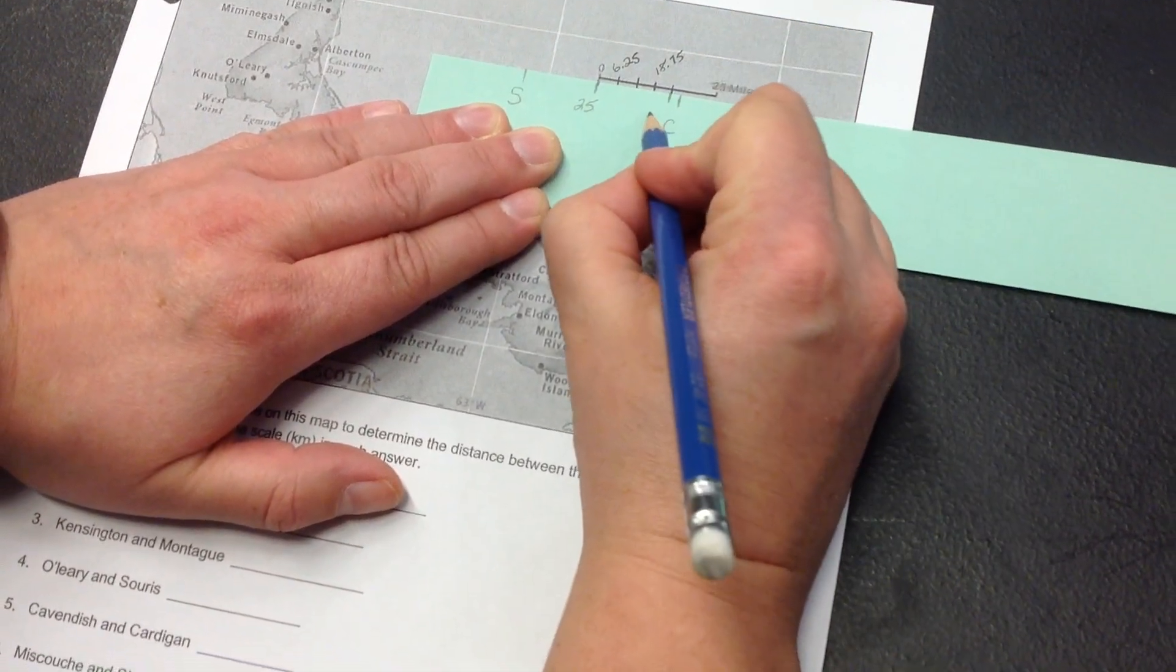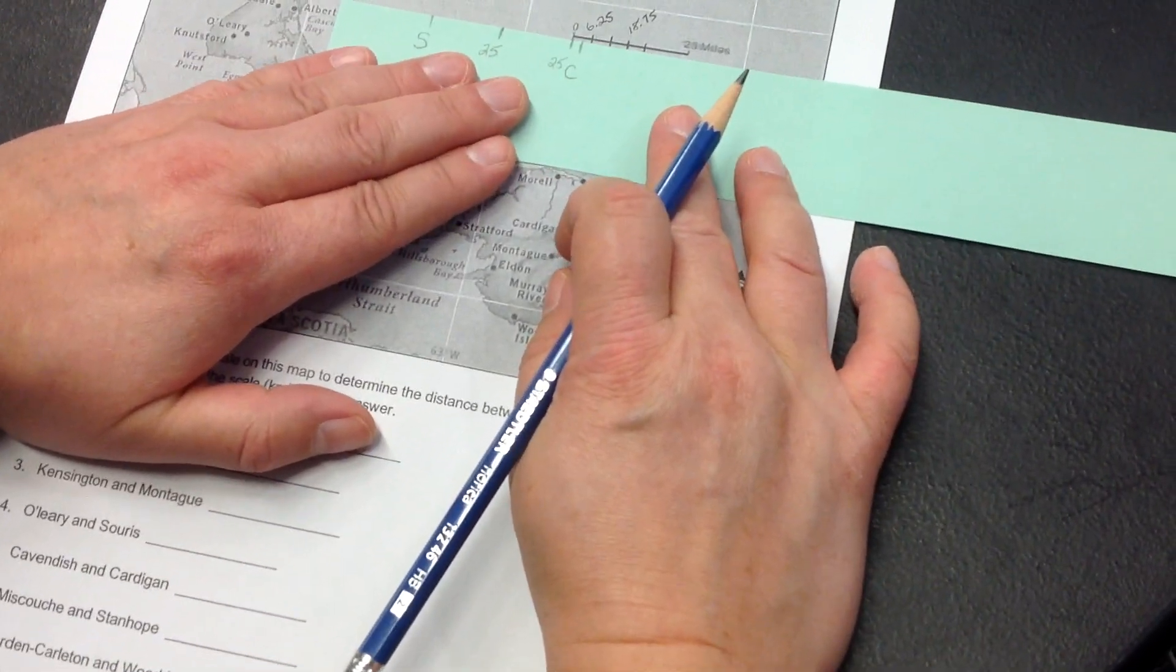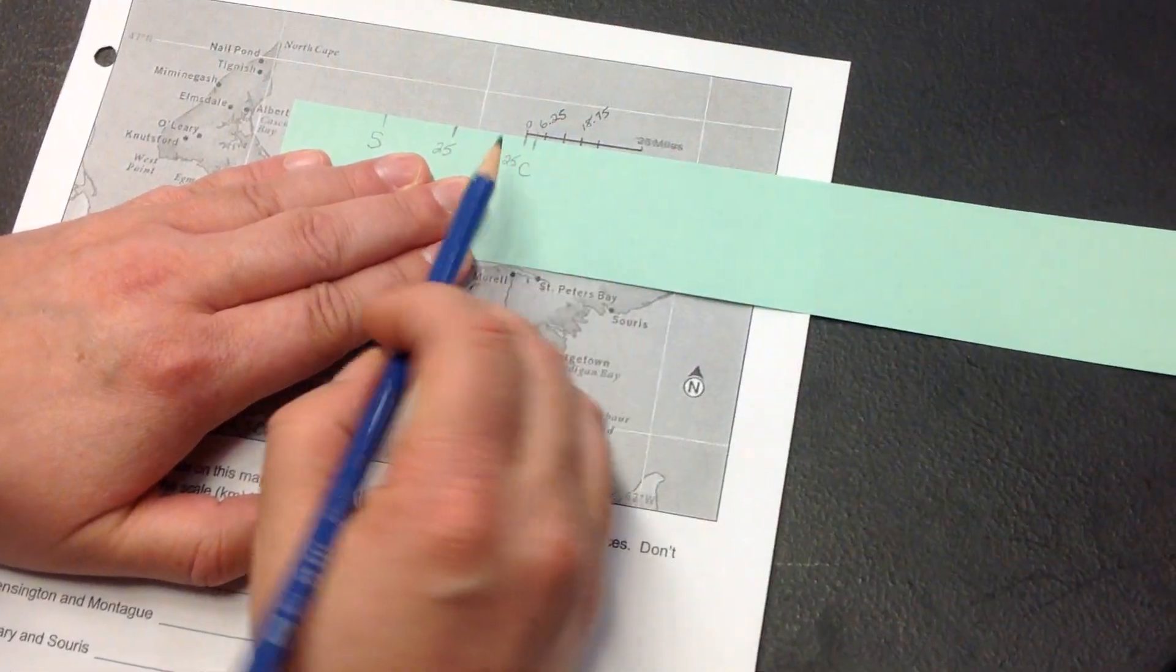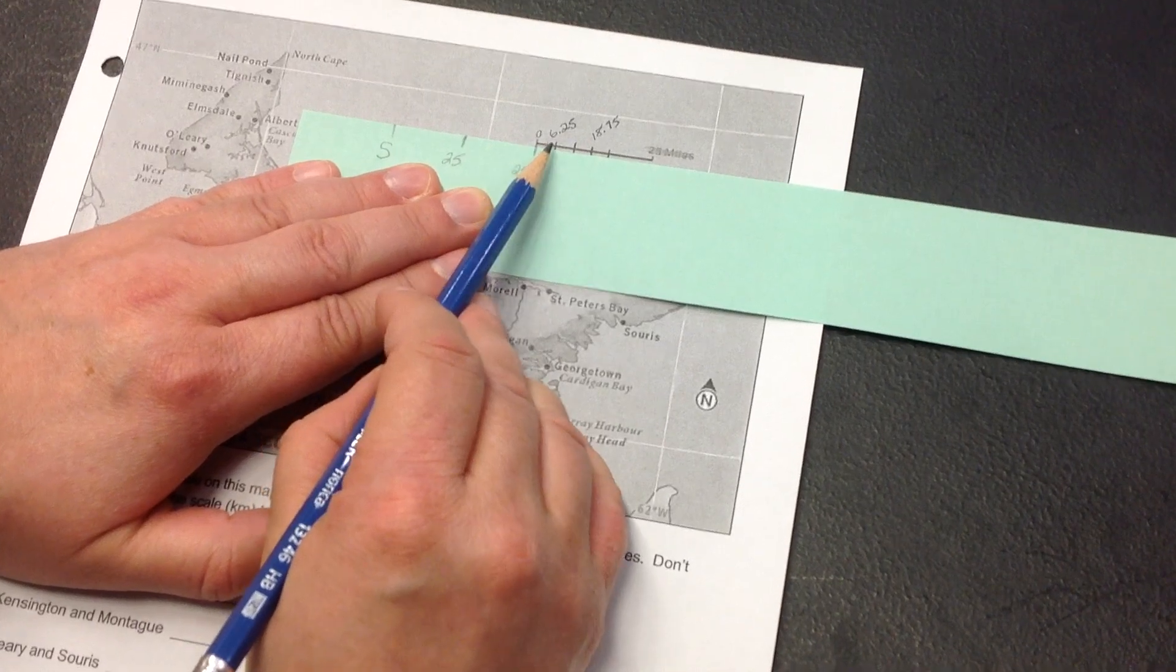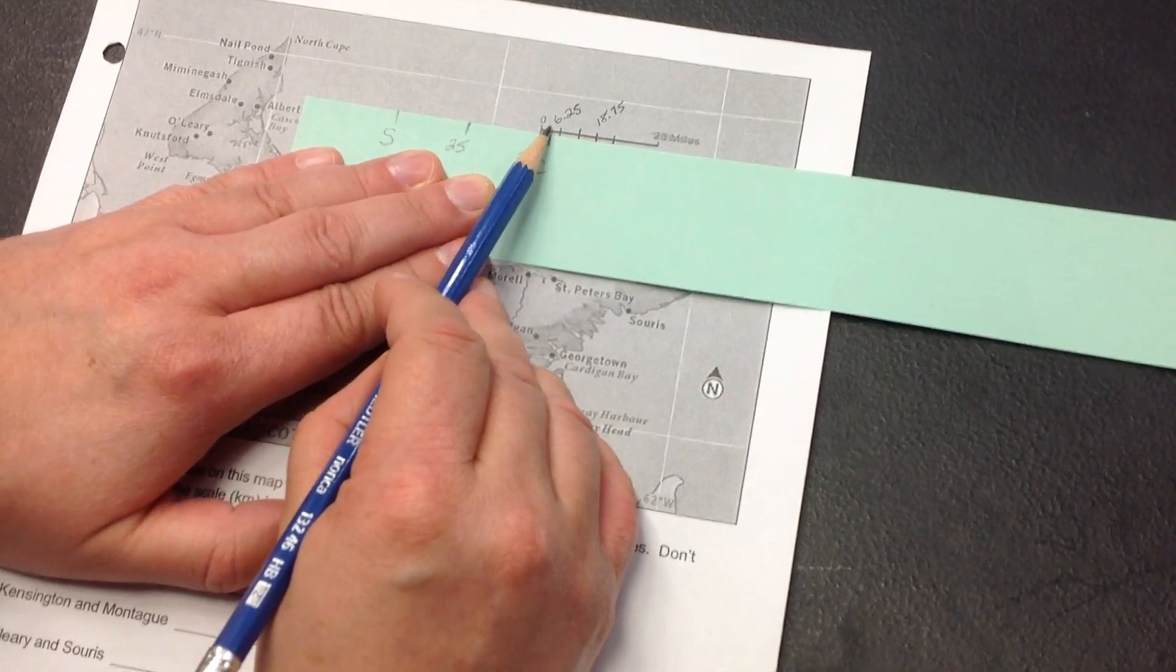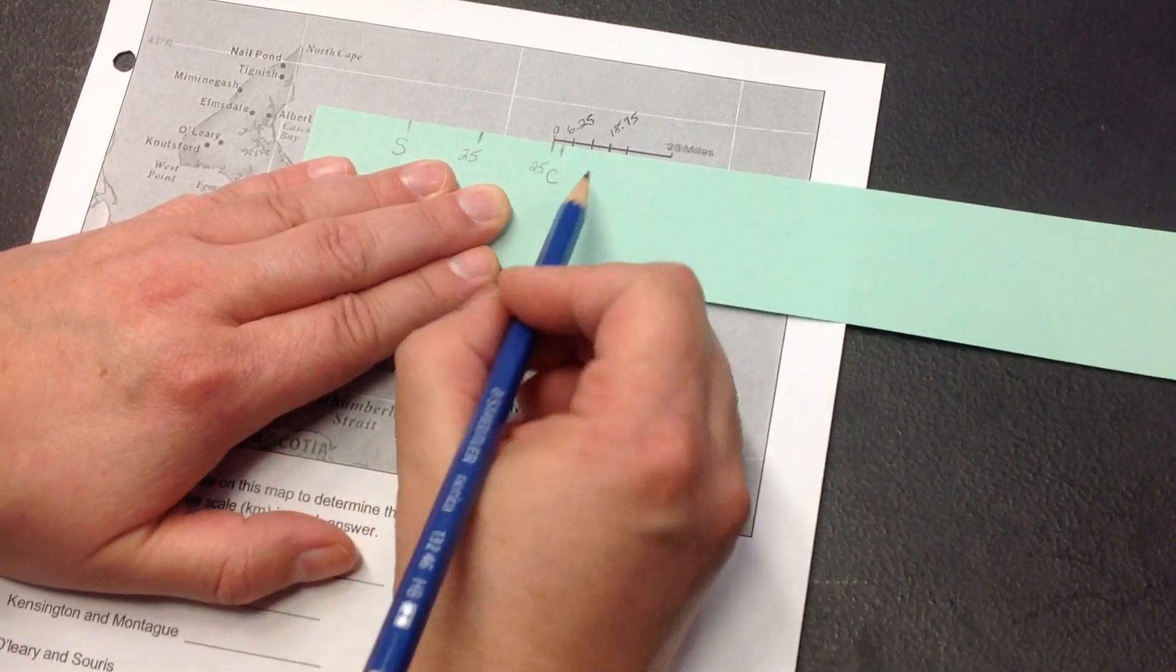Now, I slide that over and I'm ending up halfway between zero and 6.25. So, what we're going to do is we're going to estimate that's about halfway and halfway between zero and six is three. So, that's three kilometers from this point to this point.